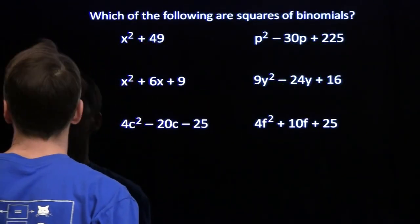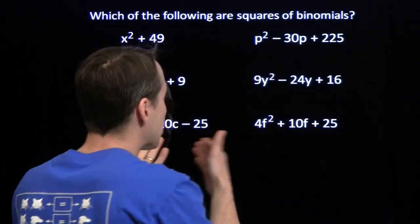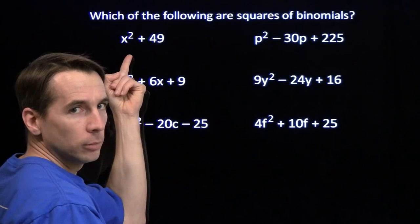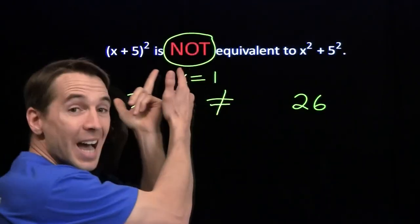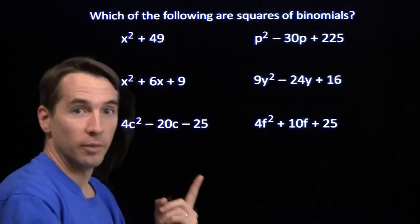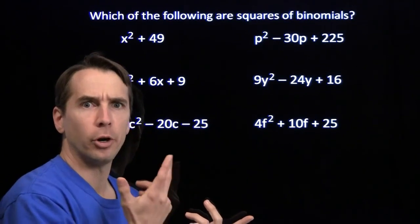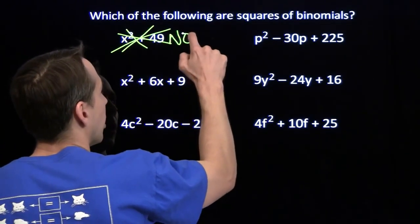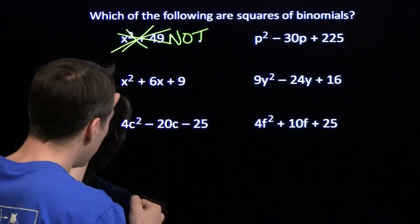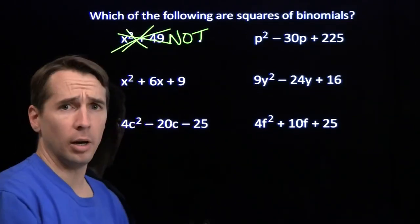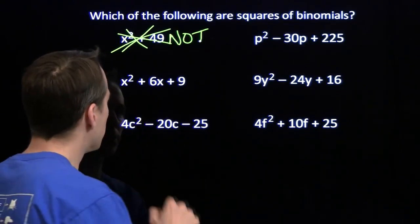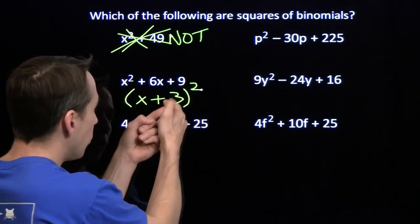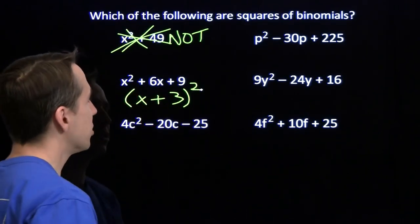Now we're going to recognize squares of binomials going the other direction — start with expressions and figure out which ones are squares of a binomial. x squared plus 49 is NOT the square of x plus 7, because squaring x plus 7 gives a middle term of plus 14x. For x squared plus 6x plus 9: if this is the square of a binomial, it's the square of x plus 3, and indeed 2 times 3x equals 6x. That IS the square of a binomial.